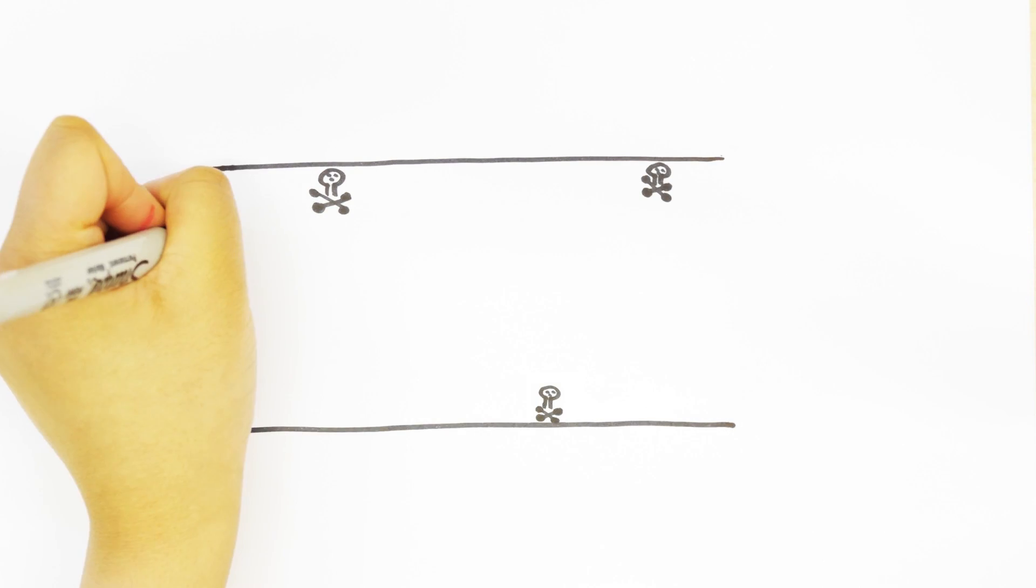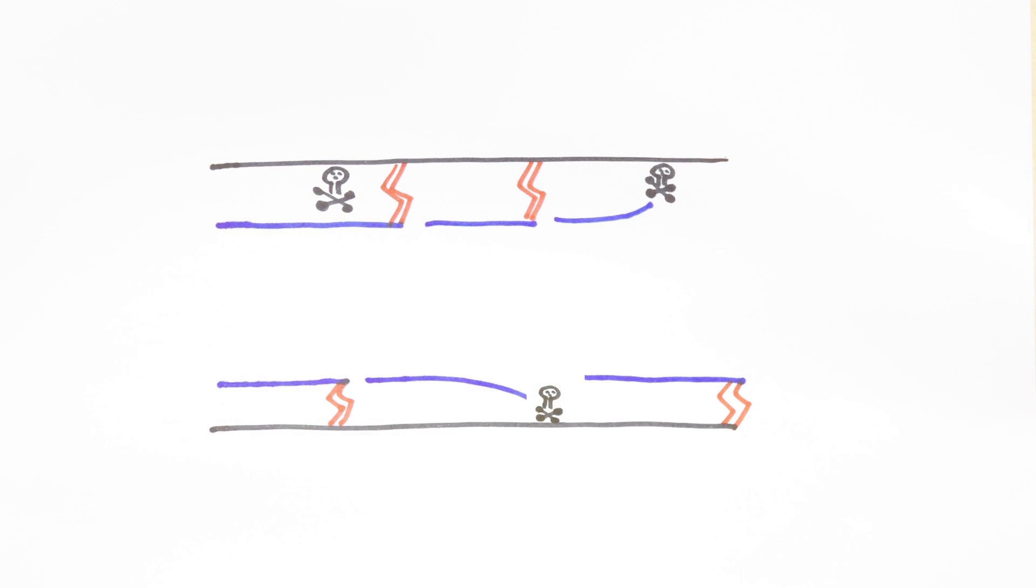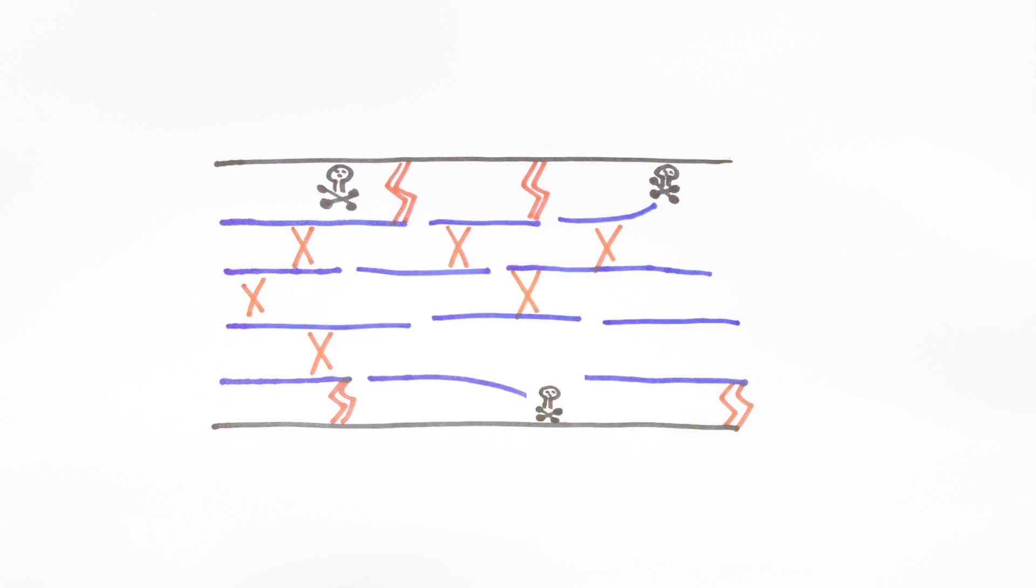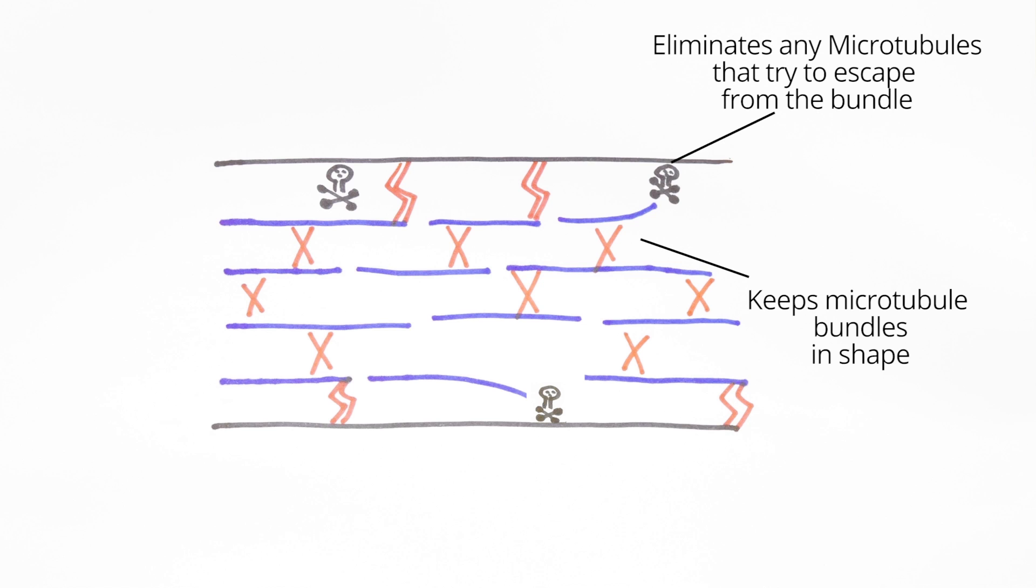Apart from SHOT dystonin we work on other proteins keeping order through very different mechanisms. For example one sits within microtubule bundles to keep them in shape. Another sits on the inner surface of axons from where it eliminates any microtubules which try to escape from the bundle.